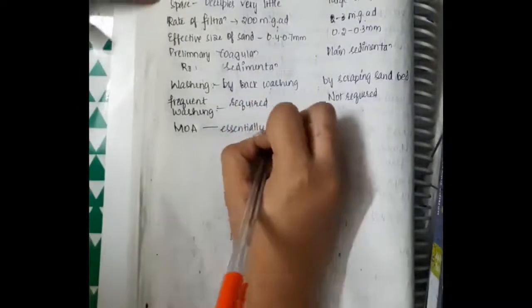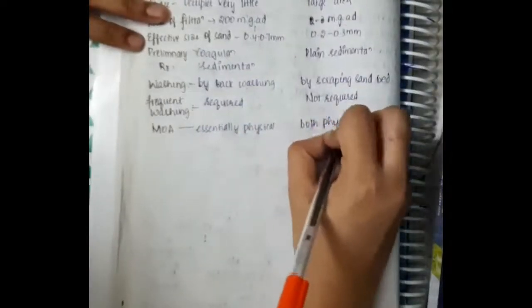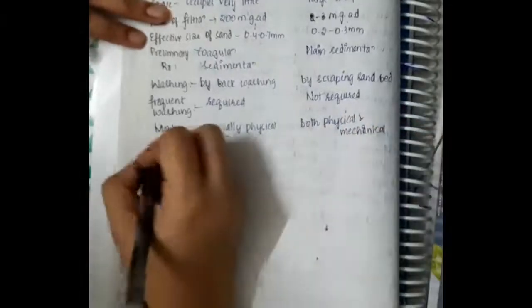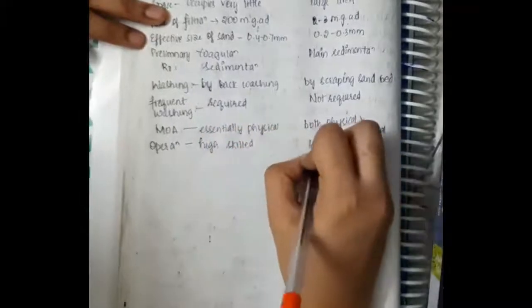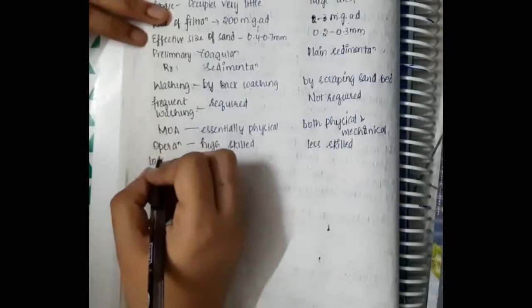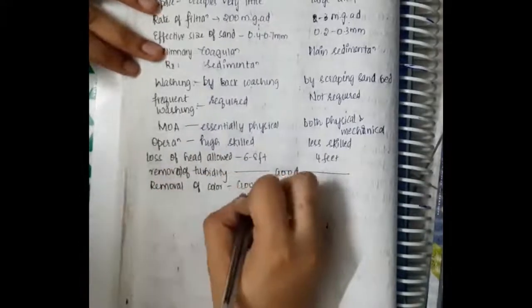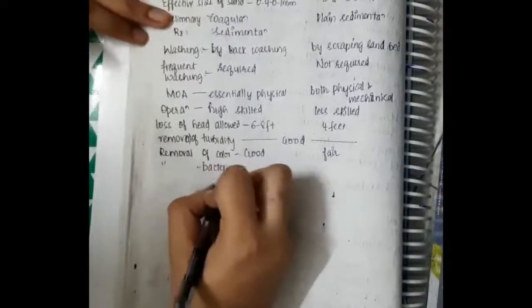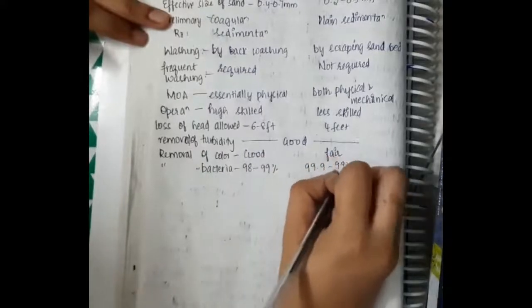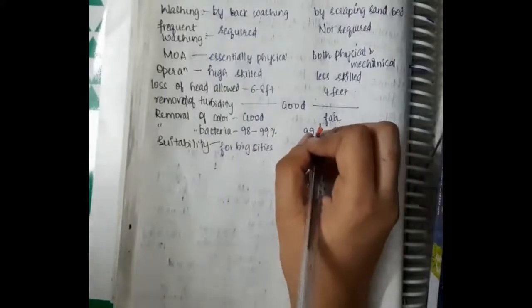The mechanism of action of rapid sand filter is mainly by physical means, whereas the mechanism of action of slow sand filter is by both physical and biological means. Operation of rapid sand filter requires high skill and that of slow sand filter is less skilled. Loss of head allowed is 6 to 8 feet in rapid sand filter and 4 feet in slow sand filter. Removal of turbidity is good for both. Removal of color is good for rapid sand filter and fair in slow sand filter. Removal of bacteria is 98 to 99% in rapid sand filter and 99.9 to 99.99% in slow sand filter. Rapid sand filters are suitable for big cities and slow sand filters for smaller towns.